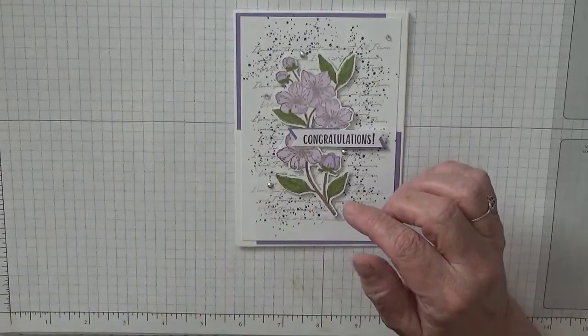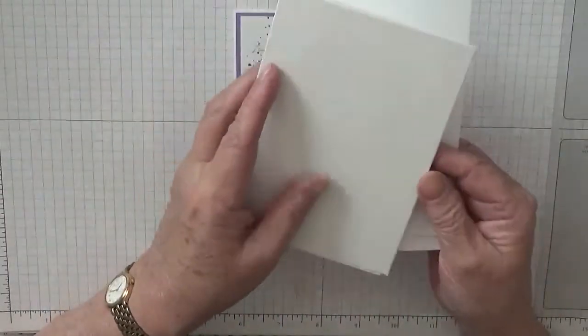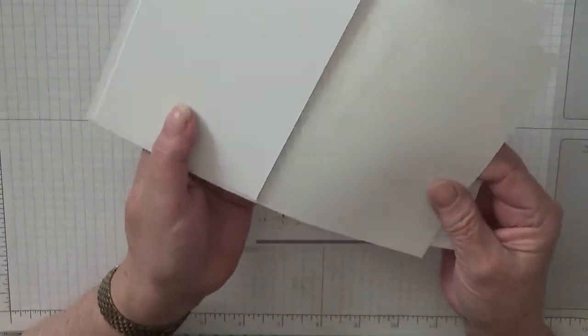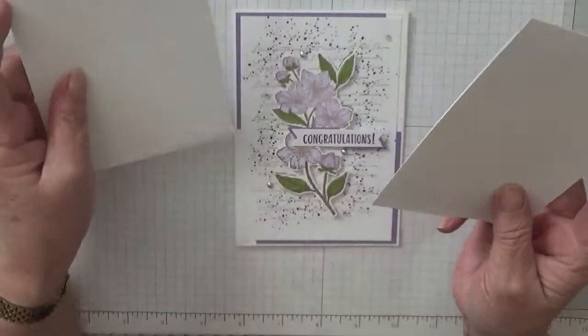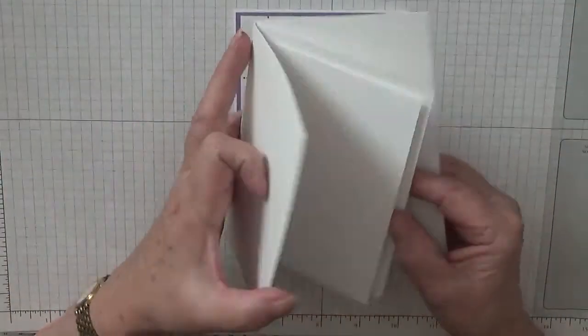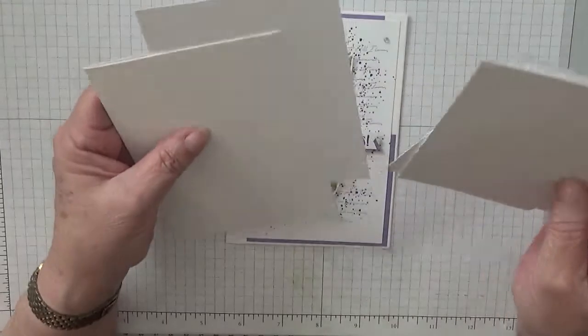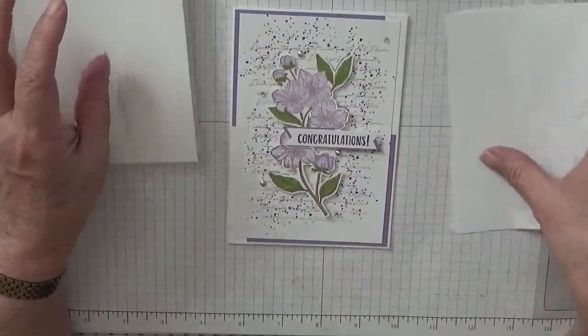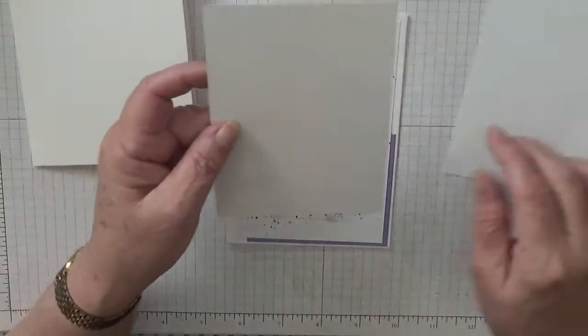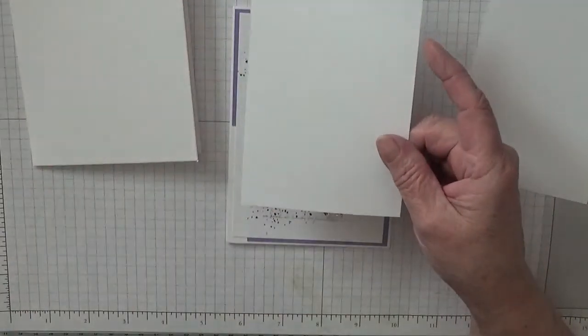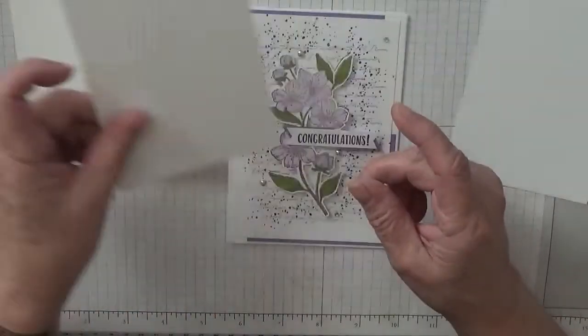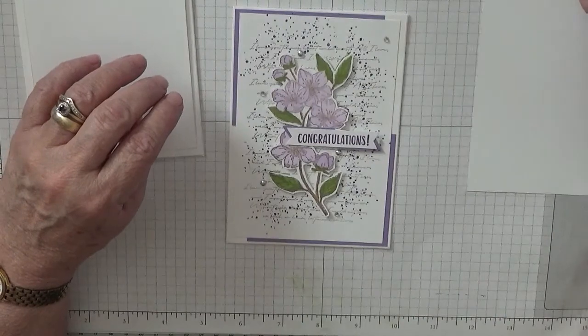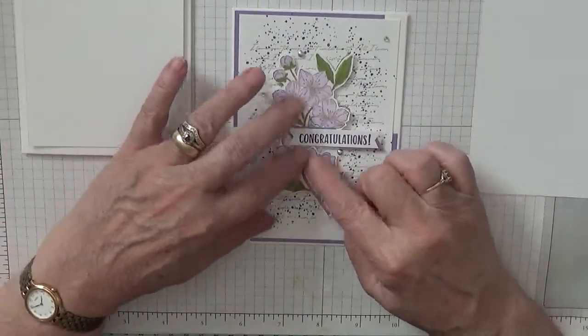The cardstock you'll need is 5 5/8 by 3 7/8, scored at 4 1/8, folded in half and burnished. Two pieces of white card, one at 5 5/8 by 3 7/8 for the inside, one at 5 and a half by 3 3/4 for the front, and a bit of scrap for the flower because we're going to cut it out.